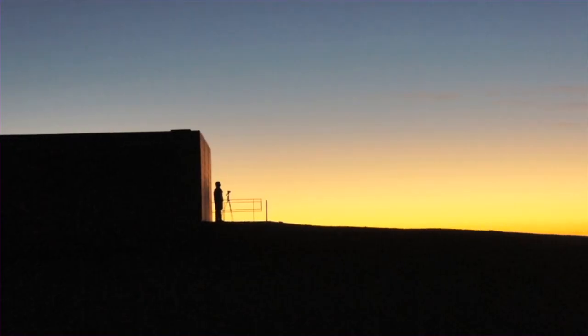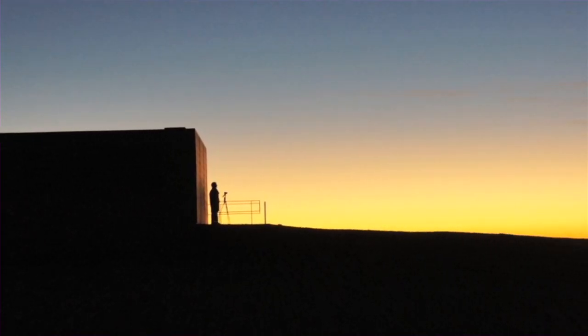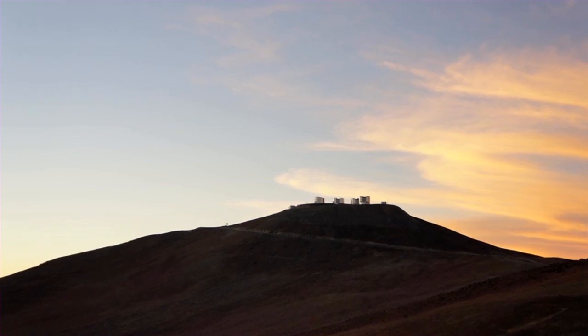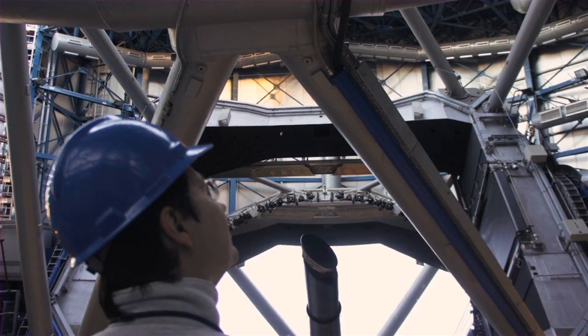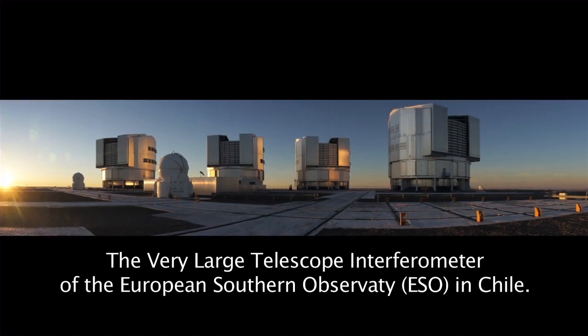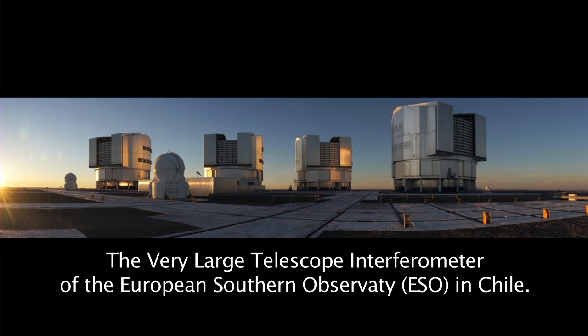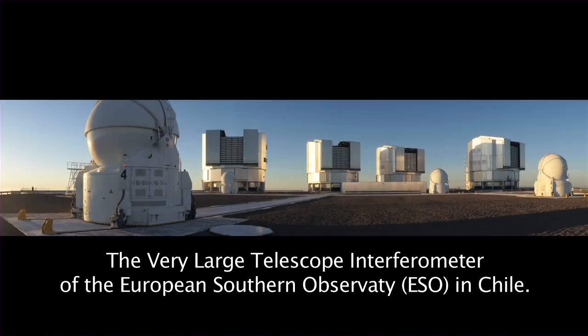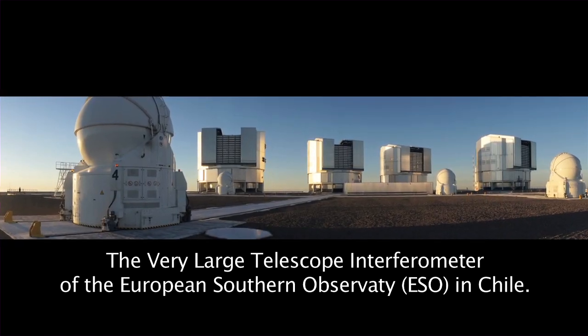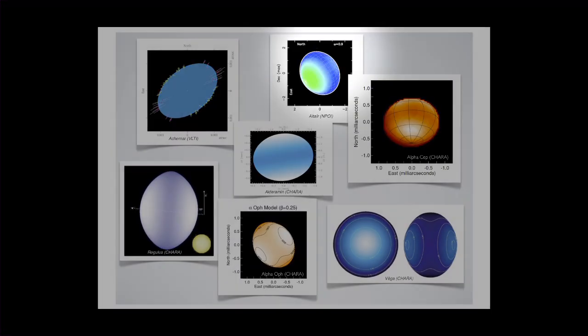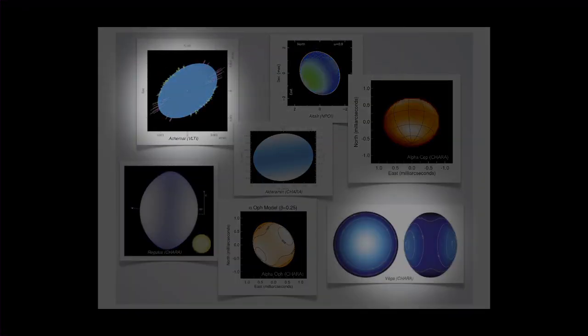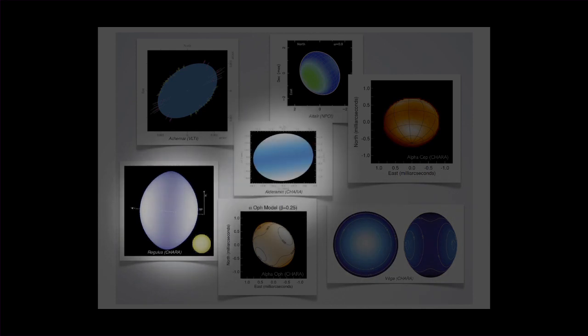The advancement of observational techniques enables us to study the surface of near stars. For that, we combine several telescopes in a technique named interferometry. Recent observations from interferometers, such as the VLTI, the Very Large Telescope Interferometer, and CHARA, the Center for High Angular Resolution Astronomy, have allowed us to measure the shape of fast-rotating stars: Altair, Achenar, Vega, Regulus, and Alderamin.